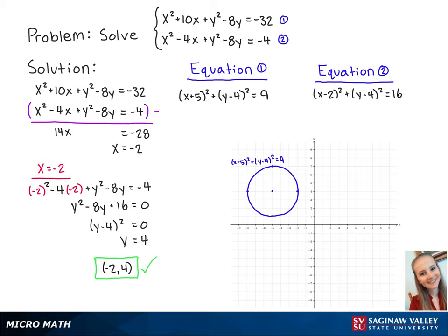Now we can see our solution at the point negative 2, 4, and this completes the problem.